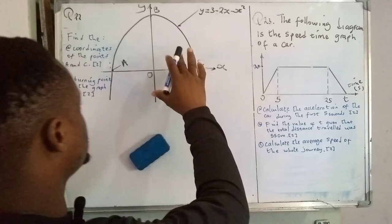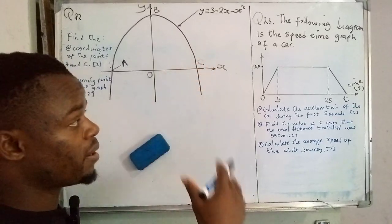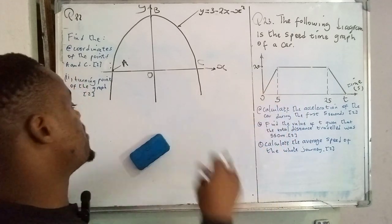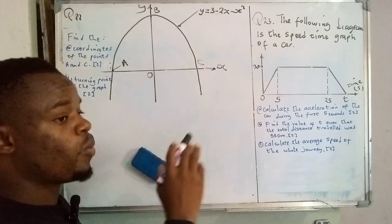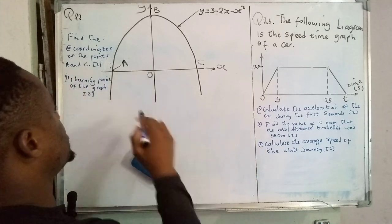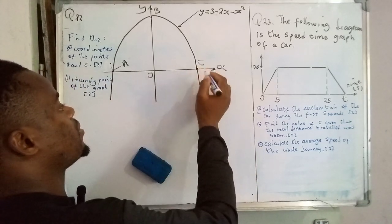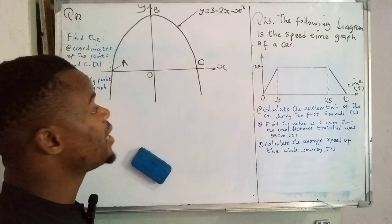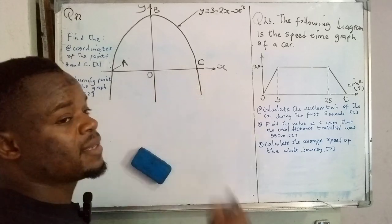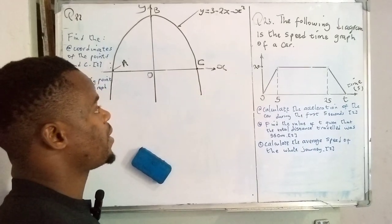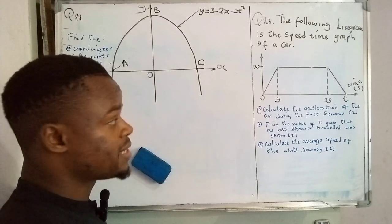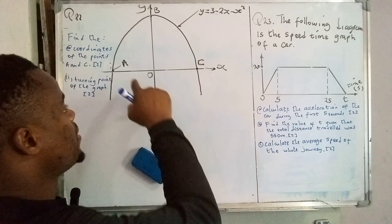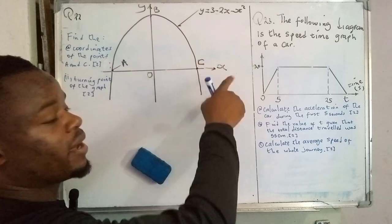This one is actually a parabola and that one is a time graph. In the first problem, they want us to find the coordinates of point C and point A. A and C are x-intercepts — the points at which the graph touches the x-axis.